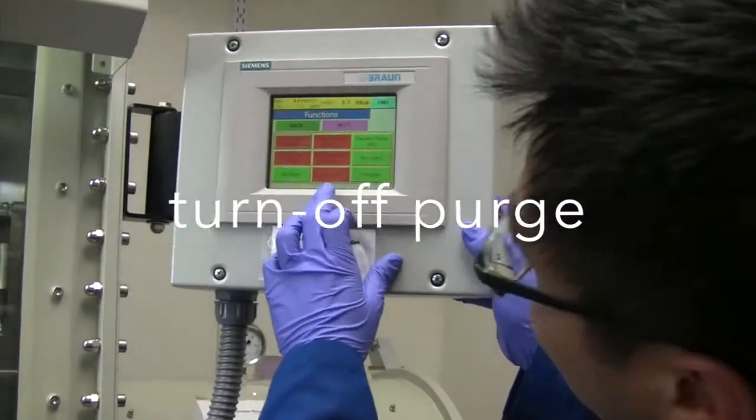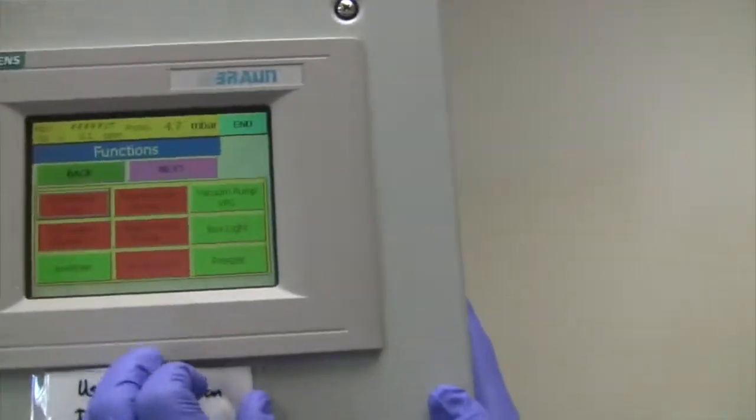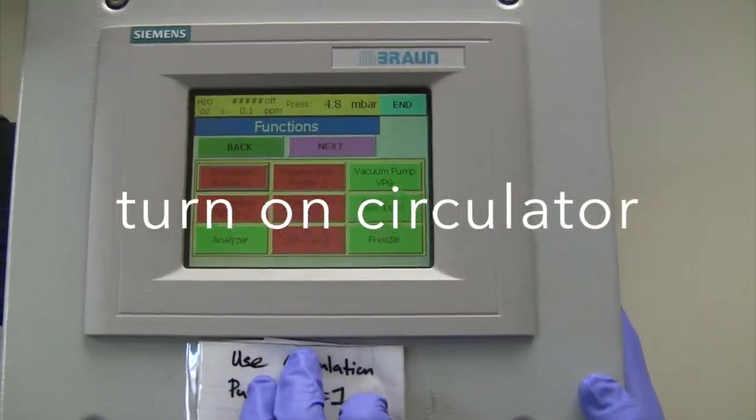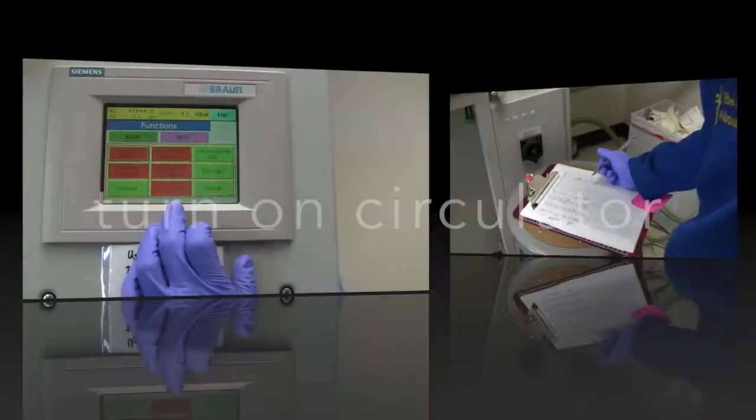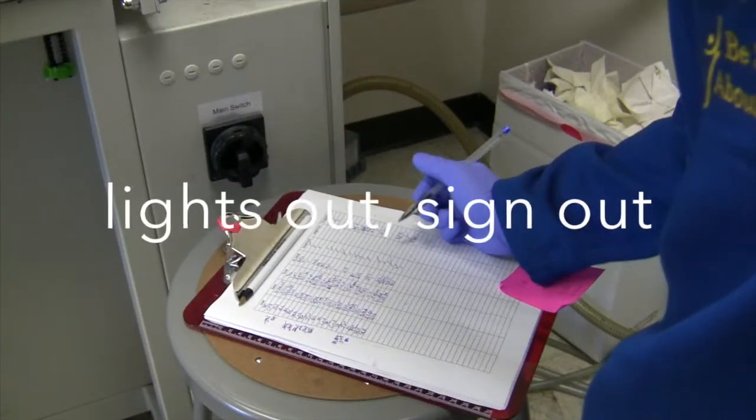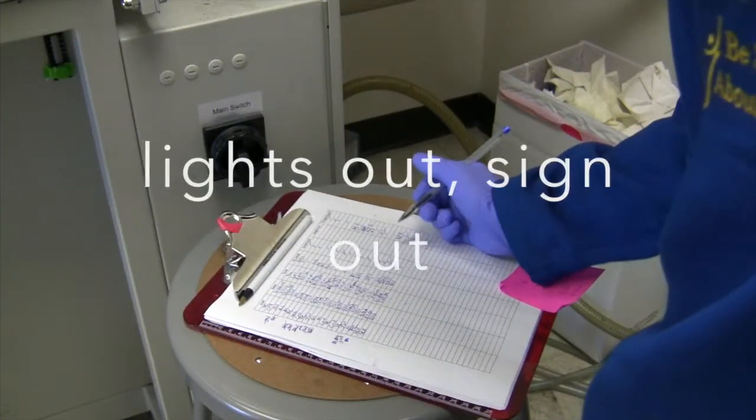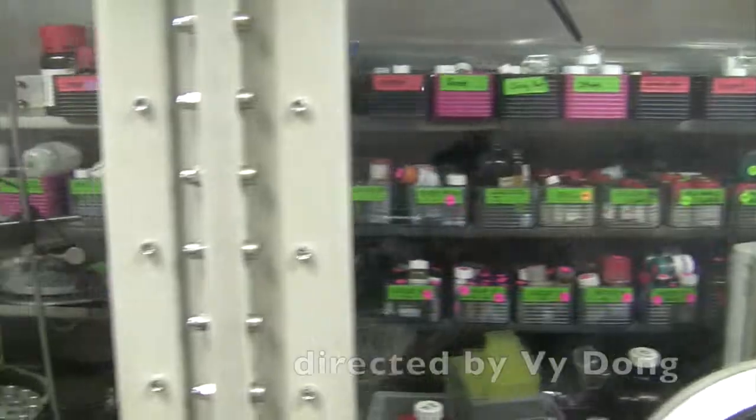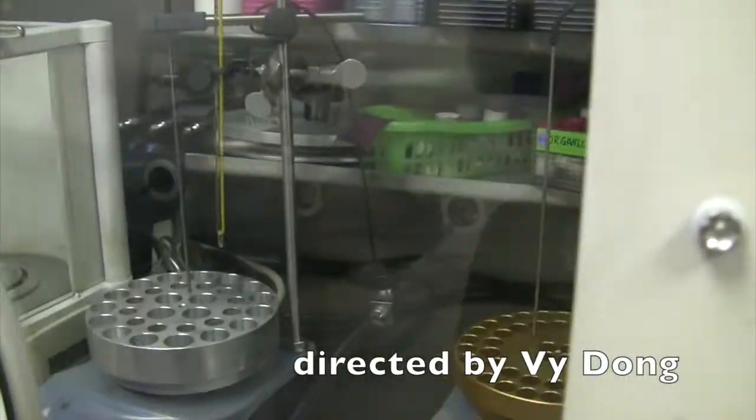After 5 minutes of purging, be sure to turn off the quick purge. Turn on the circulator and turn off the glove box lights. You can now sign out. Good luck with your inert atmosphere experiments!